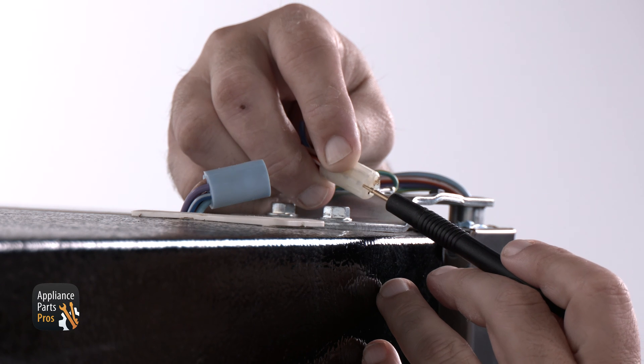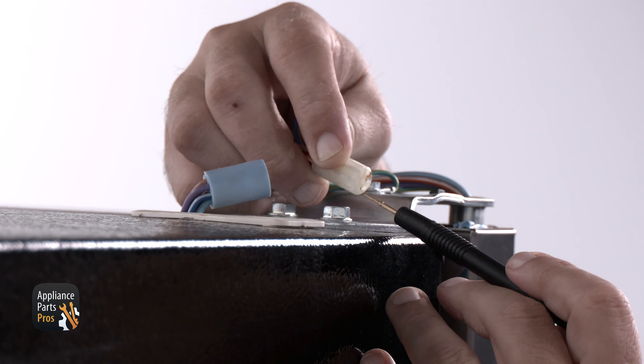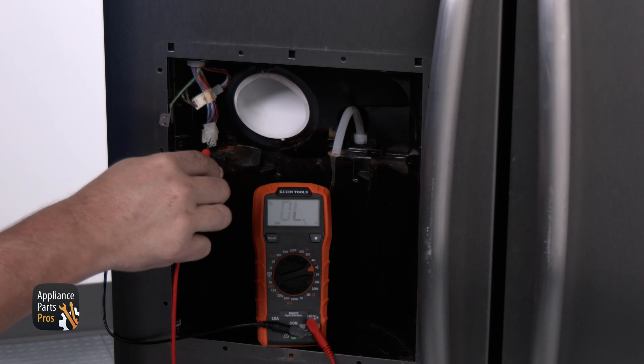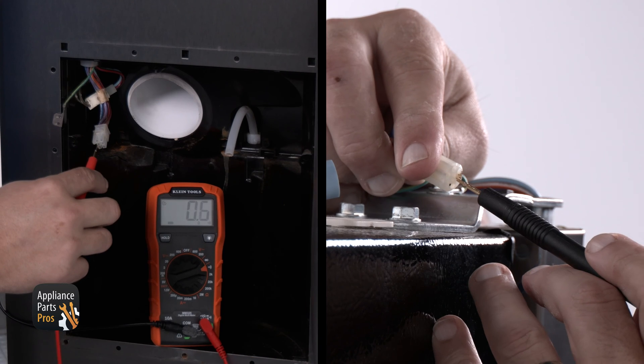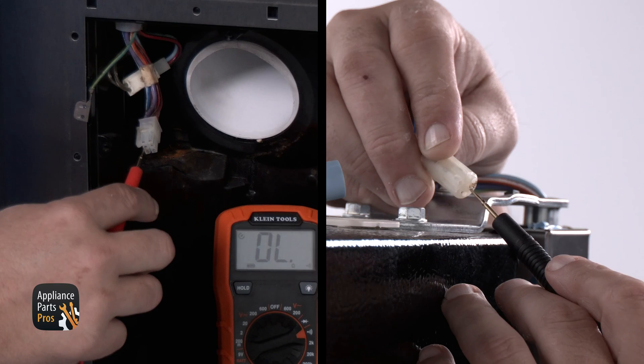Touch one meter lead to the orange-white wire at the top of the door, and then the other to the dispenser. Then touch from the red wire to the red-black wires at the same locations. Then from the light blue to light blue, from the tan to tan, from the purple to purple, and from blue-white to blue-white. There should be continuity at each of these connection points.